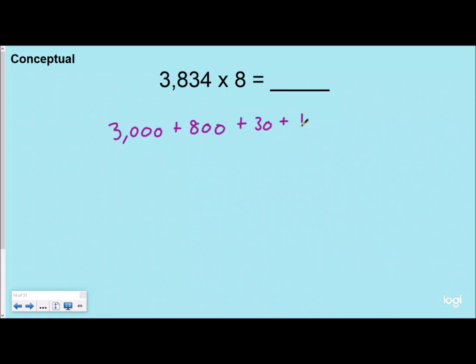The standard algorithm is kind of a shortcut that works because we're a base-10 number system and it's pretty easy to regroup with those things. But really what's happening when you multiply is you are multiplying an 8 in the ones place by 3,834. This is kind of like you would do on an open array or a partial product.